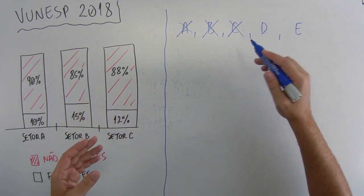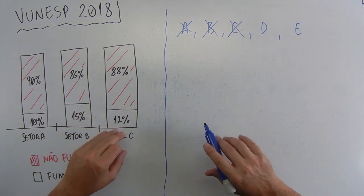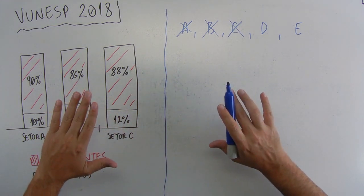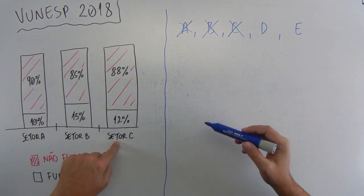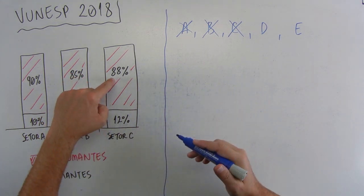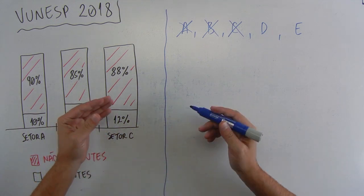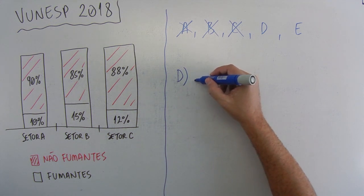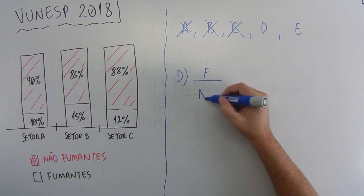Vamos para a alternativa D. No setor C, então está aqui, a gente está de olho nele, para cada três fumantes há 22 não fumantes. Bom, vamos com calma aí que ele deu valores em cima dessa porcentagem, mas a gente não tem o quantitativo do setor C. Porém, a gente pode assumir que imagina que o setor C tenha 100 pessoas. Quer dizer que 88 não fumam e 12 fumam, mas ele deu uma proporção. Então, vamos ver aqui, na alternativa D, ele disse, vamos colocar assim, para cada três fumantes há 22 não fumantes. Não fumantes.